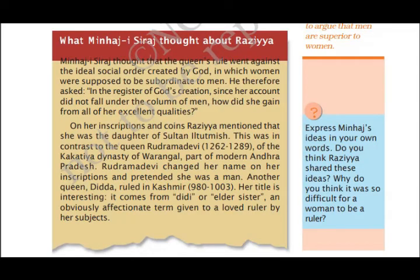Minhaj-i-Siraj thought that a queen's rule was against the ideal social order created by God. He also questioned how she had acquired such good qualities, since she was a woman. On her inscriptions and coins, Razia mentioned that she was the daughter of Sultan Iltutmish. Female rulers in history are very few, so this portion about Razia as a lady ruler is historically important.